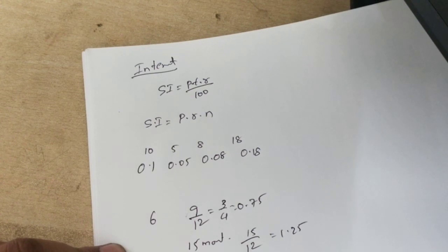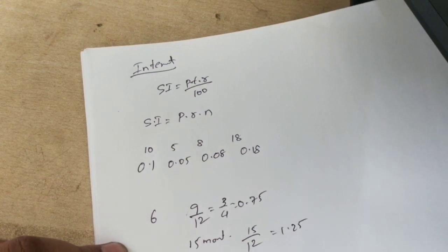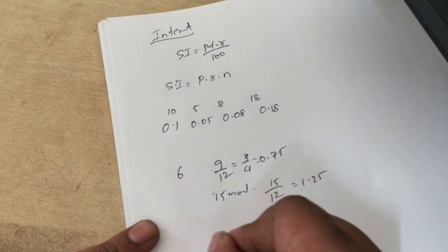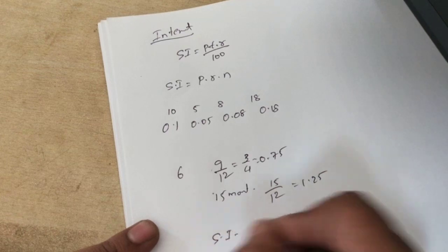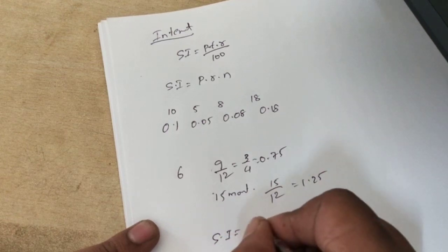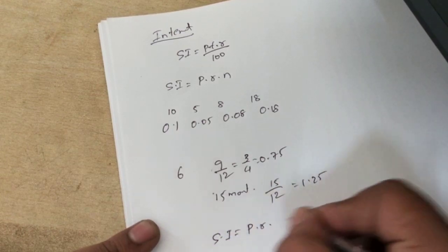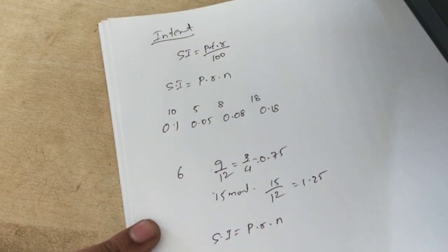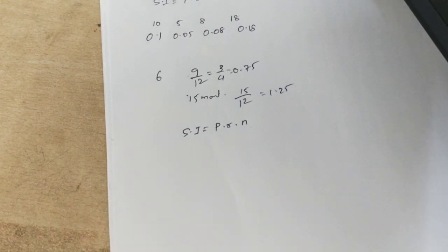So the simple interest formula is SI = P × r × n, where P is the principal, r is the rate of interest (as a decimal), and n is the time duration in years.